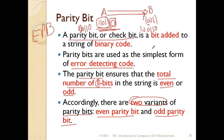Now what will B do? B will request new data from A, process it, and get an accurate output. So this is how even parity bit works.